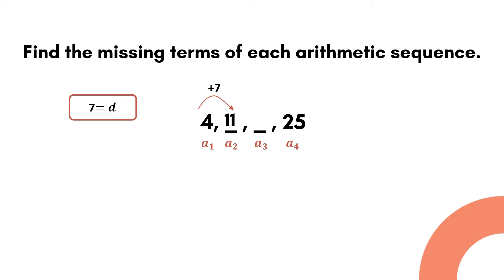Then we repeat the process. We have 11 plus 7 is equal to 18. Therefore, the second and third term of the sequence are 11 and 18 respectively.